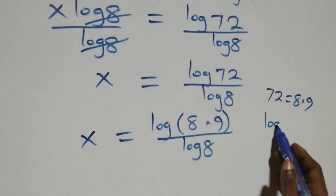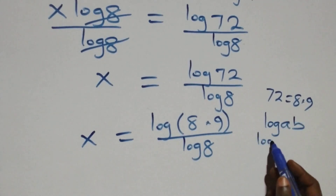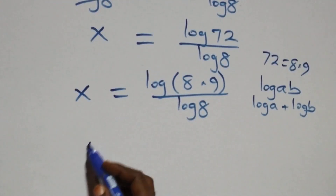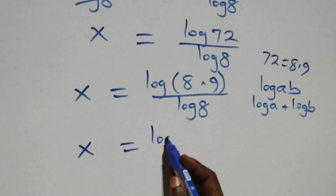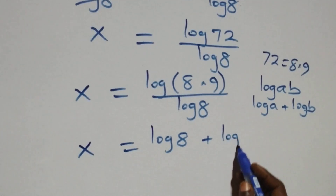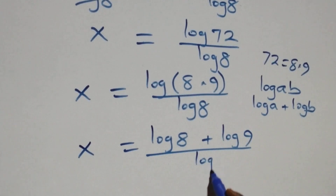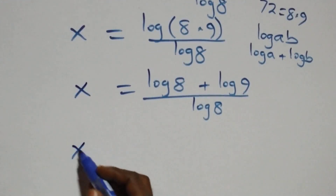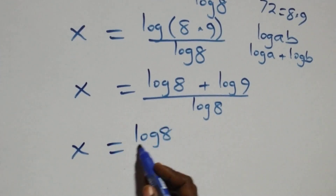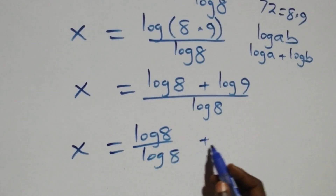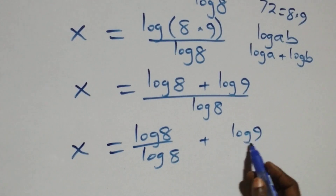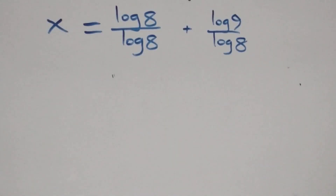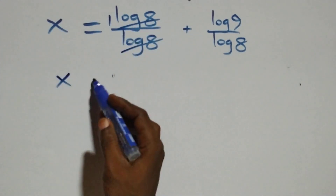This follows from the law of logarithms: log of a times b is the same thing as log a plus log b. So what we have becomes x equals to (log 8 plus log 9) over log 8, which we can split as log 8 over log 8 plus log 9 over log 8, giving x equals 1 plus log 9 over log 8.